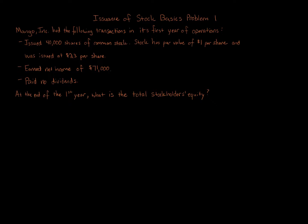We're looking for total stockholders' equity. Remember, on a balance sheet, you have assets equals liabilities plus owner's equity or stockholders' equity. We're dealing with corporations here, specifically Mango Inc.'s stockholders' equity, which is broken into two parts: the paid-in capital section and retained earnings.